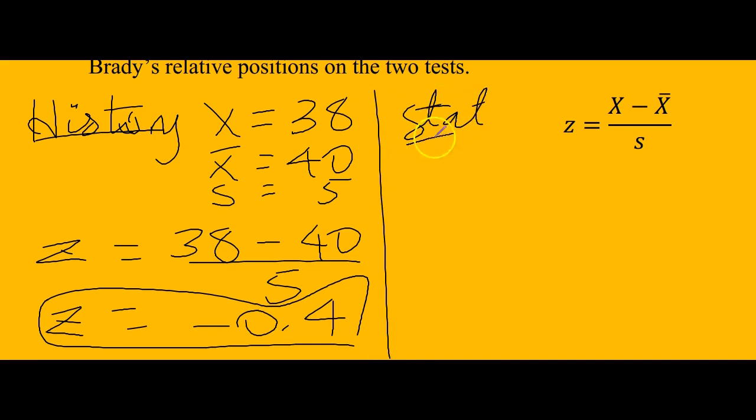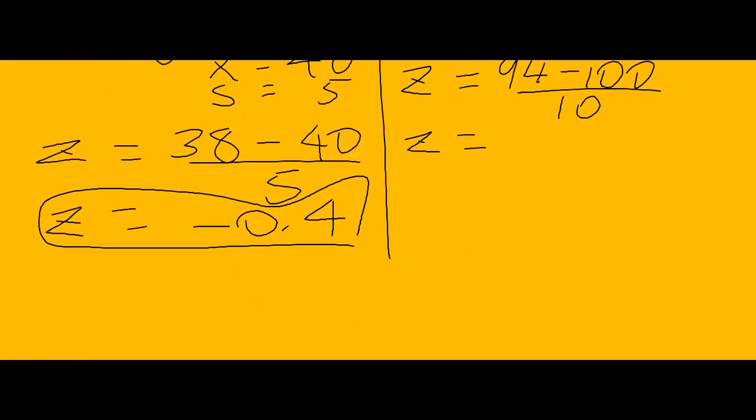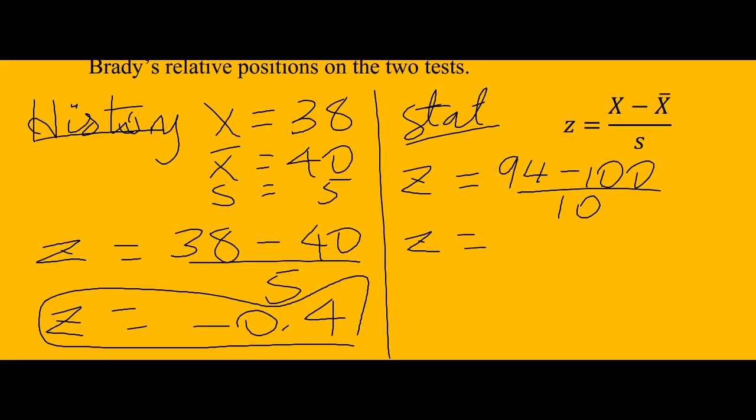Then we do the same for statistics. The raw score he got was 94. So 94 minus the mean, which is 100, over the standard deviation, which is 10. The z-score is negative 0.6.